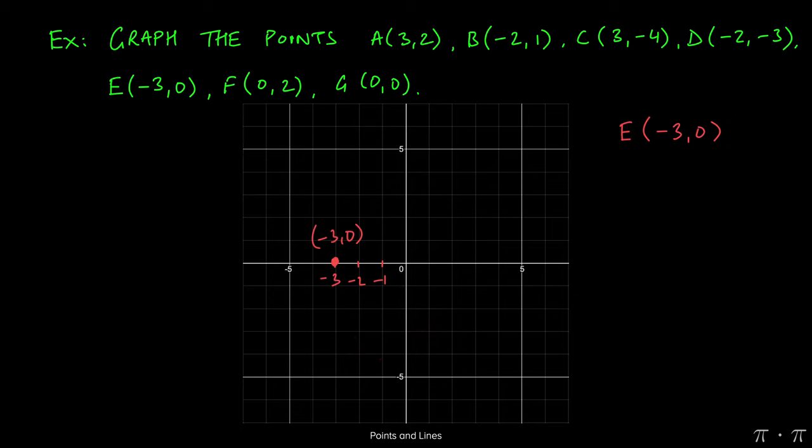Point E is a little bit special. E(-3,0) implies that we're going three units to the left on the x-axis, but we're not going anywhere up or down. So the point just resides on the x-axis itself.